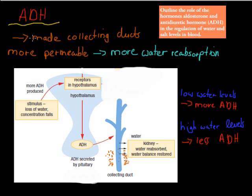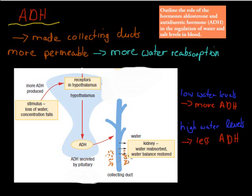First we'll cover antidiuretic hormone, also known as ADH. What it does is it makes the collecting ducts more permeable, which means we can reabsorb more water. Around the collecting ducts is the medulla — a concentrated area where salt is really concentrated. So there's a high concentration of solute outside, and in the collecting ducts there is usually lower solute concentration. Water would usually flow out from low to high, but these collecting ducts are not permeable to water, so they don't let water pass through.